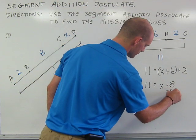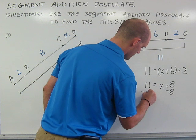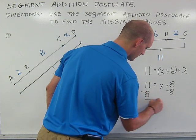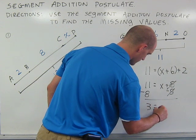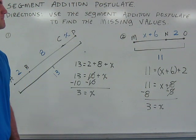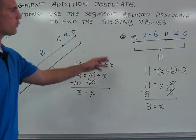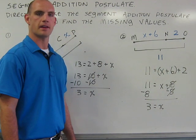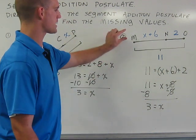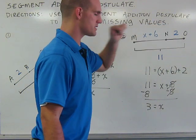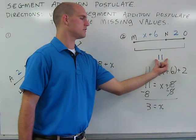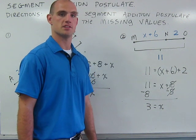I do opposite operations and I find that once again, X equals 3. When I put X back in, I get 3 plus 6 is 9, plus 2 is 11, and 11 is what my entire segment is supposed to be equal to.